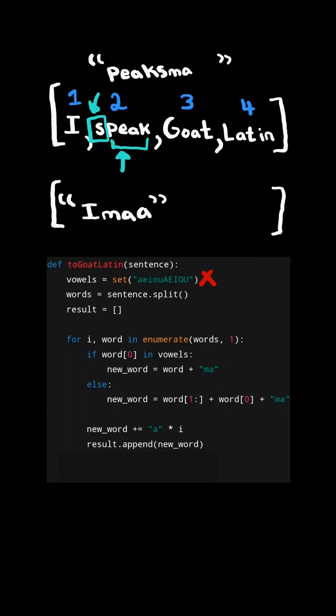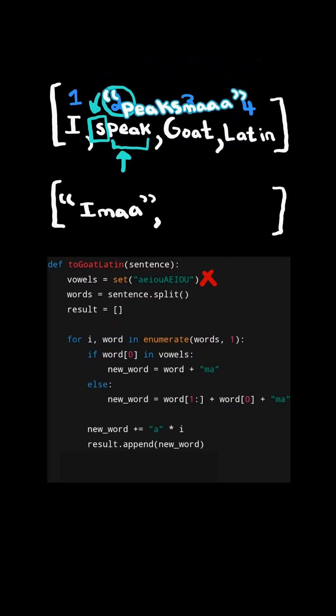And finally, we will take the letter A and multiply it by the index we are on, and append that many A's to the end of the string. And finally, we append the new word to the resulting list.